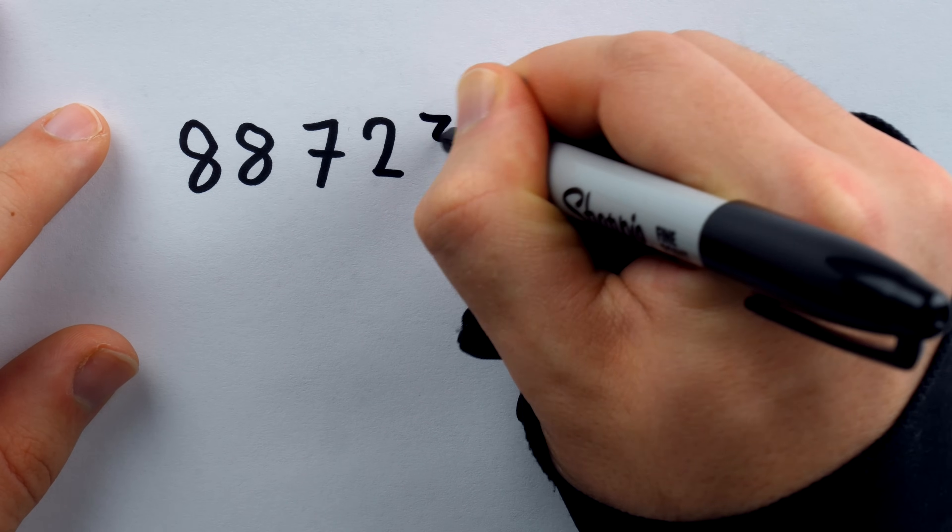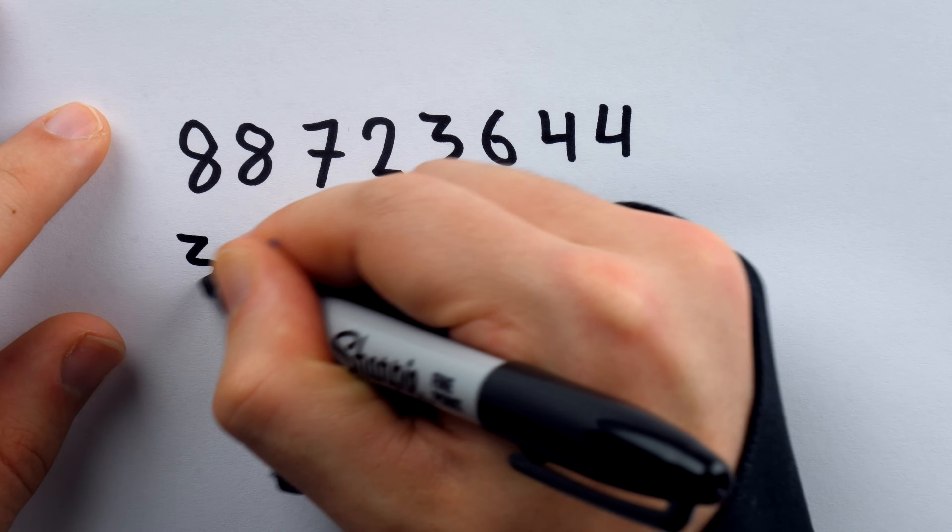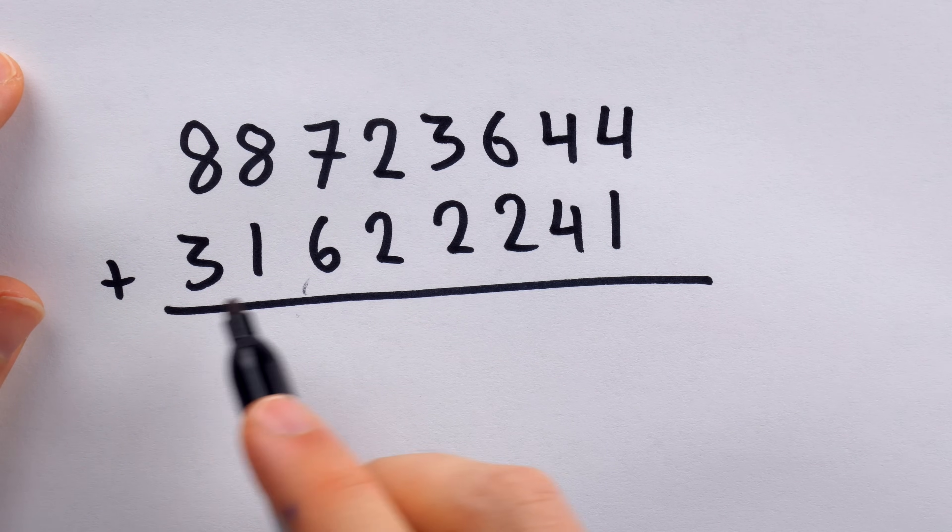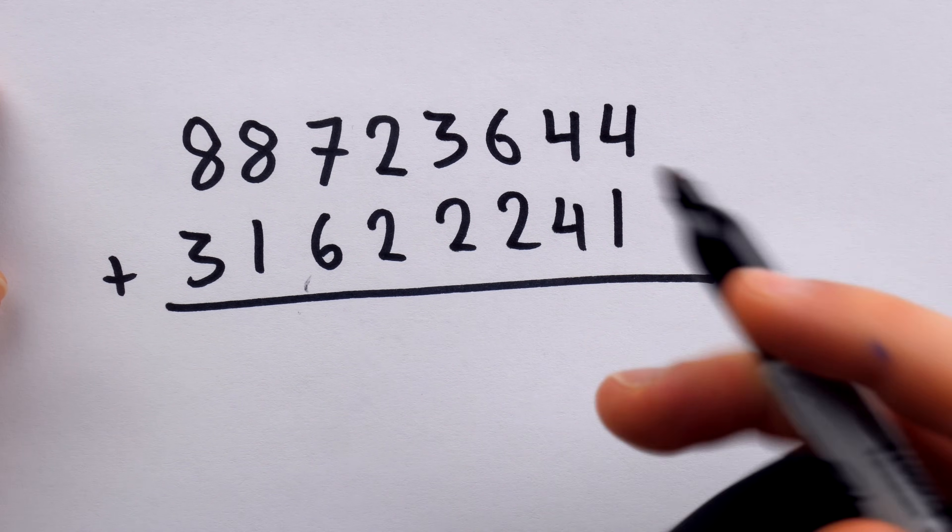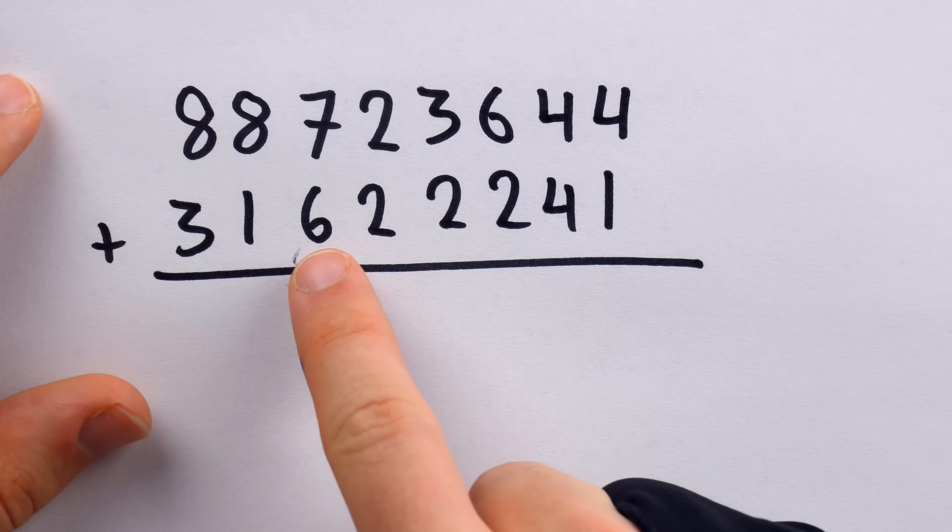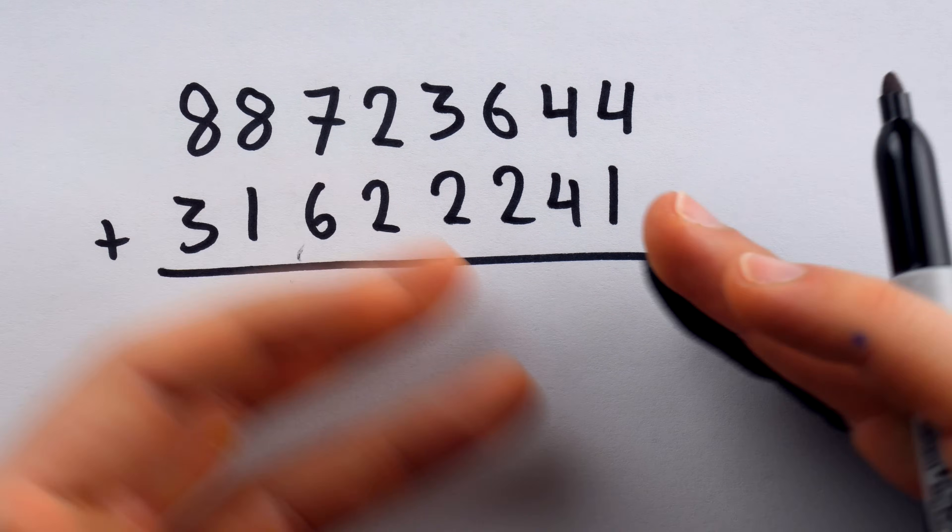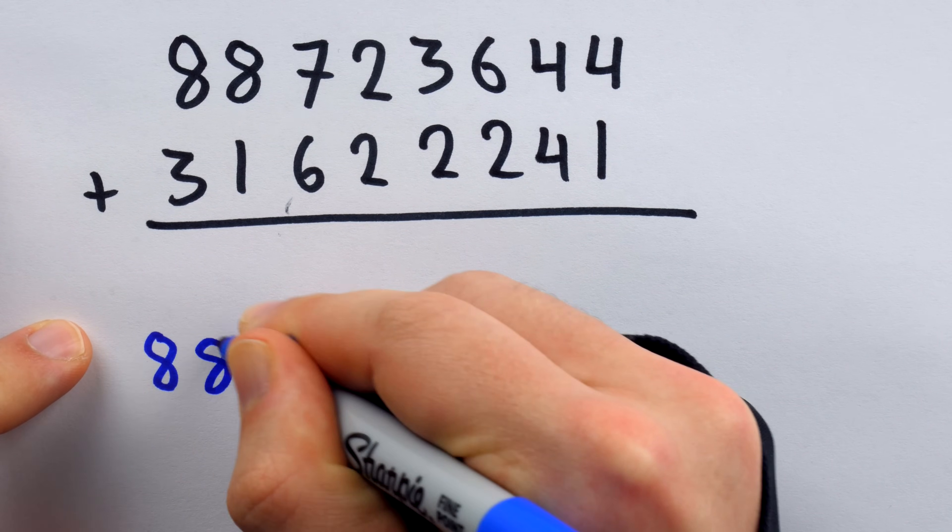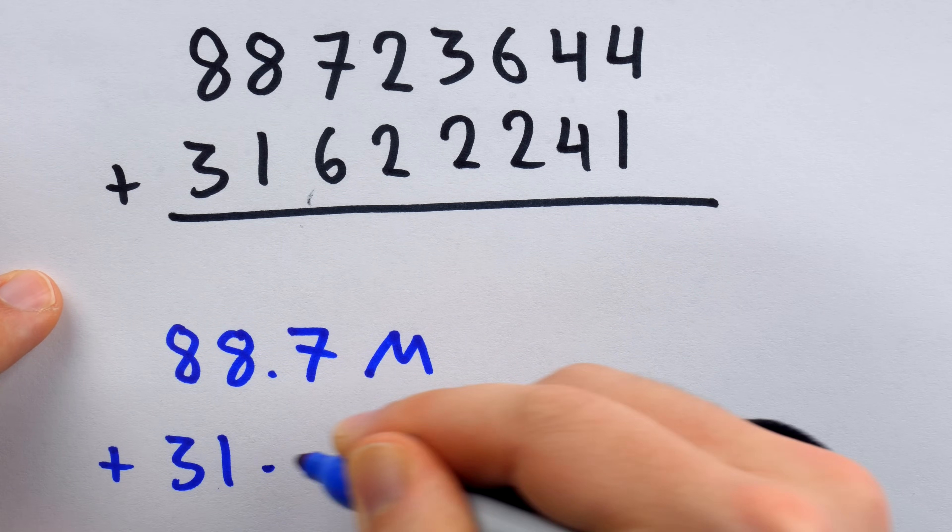Say we were doing eight digit addition problems. We can use the same sort of technique and get very accurate estimations. So here we're trying to add 88 million and change to 31 million and change. I definitely don't want to do this in my head. And I really don't feel like doing it on pencil and paper either. But again, if we round in this case, let's say to the nearest 100,000, then again, we're going to get proportionally a very accurate answer. If we round to the nearest hundred thousand, then this becomes 88.7 million plus 31.6 million.